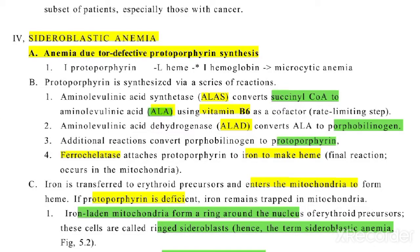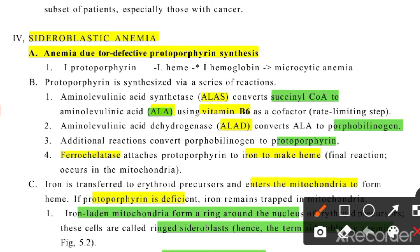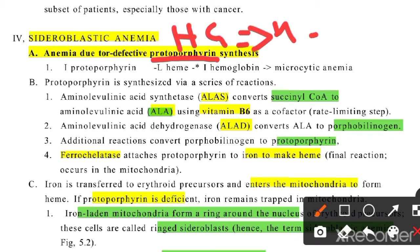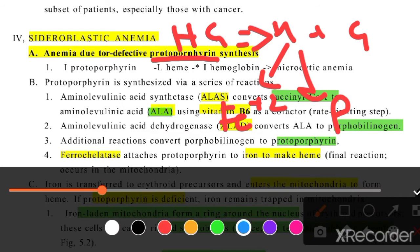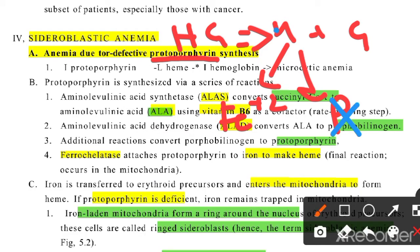Assalamualaikum. In the last section we discussed iron deficiency anemia and anemia of chronic disease. Now we're going to discuss sideroblastic anemia. In sideroblastic anemia, protoporphyrin synthesis is reduced. Hemoglobin is made up of heme and globin, and heme is made up of iron plus protoporphyrin. So if protoporphyrin is not made, heme won't be made, hemoglobin won't be made, and the patient will get anemia.